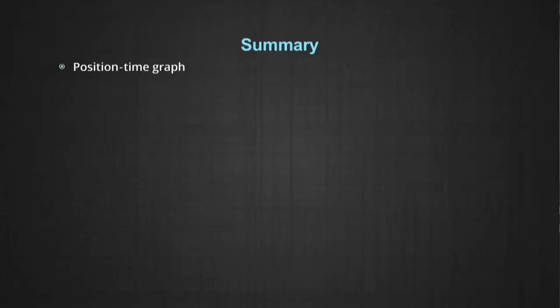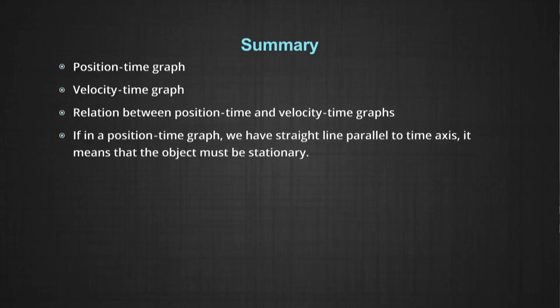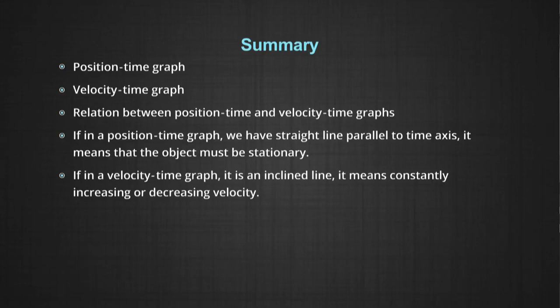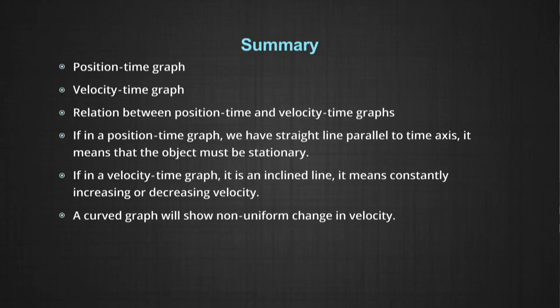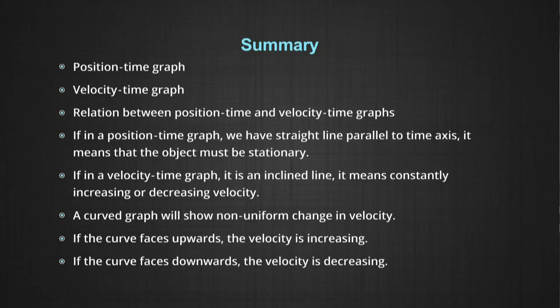So you have learned about the position-time graph and the velocity-time graph, their meanings, and the relationship between them. If a position-time graph is a straight line parallel to the time axis, the object is stationary. An inclined straight line means constantly increasing or decreasing position, i.e., uniform velocity. A curved graph shows non-uniform change in velocity. If the curve faces upward, velocity is increasing; if it faces downward, velocity is decreasing. You can use the position-time graph to create a velocity-time graph for calculations or to describe the motion of objects.